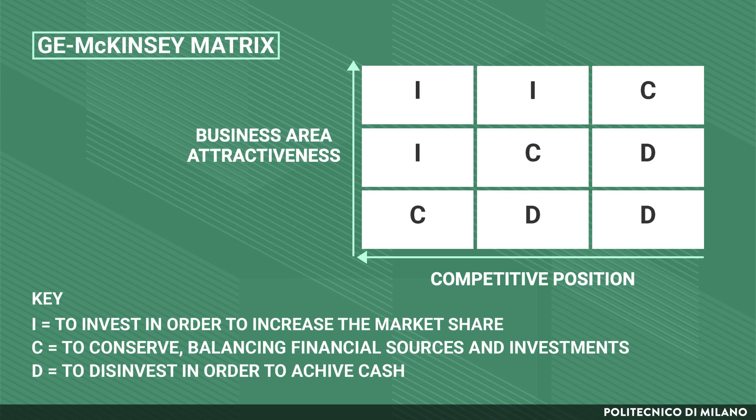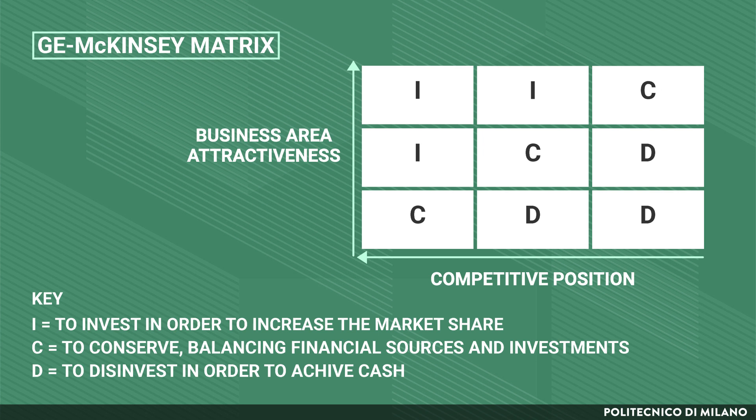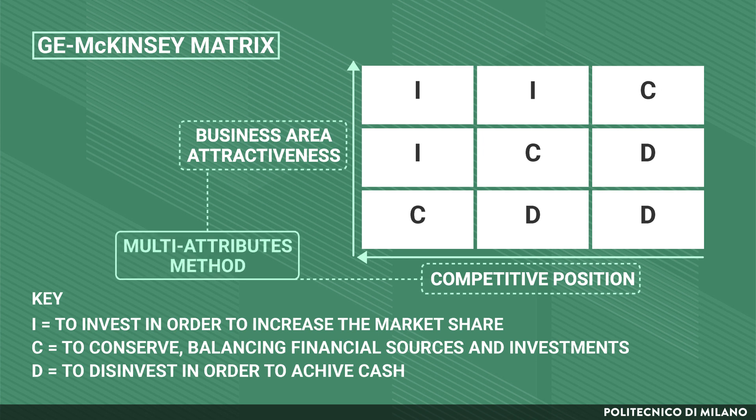By systematically weighting those variables, each business or product is classified into one of nine cells in a 3x3 matrix. Like the BCG matrix, this approach aims to compare investment opportunities. The difference lies in the fact that multiple measures are used to assess market attractiveness and competitive position.